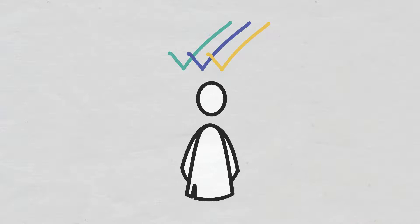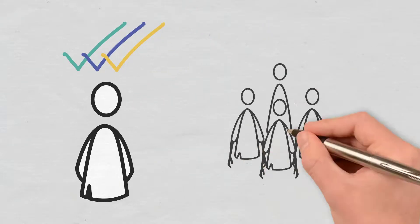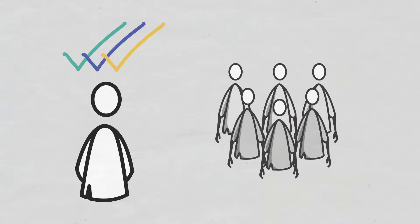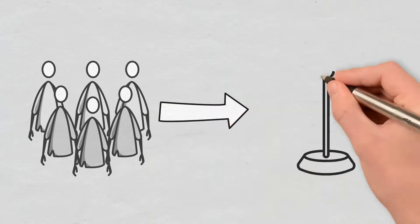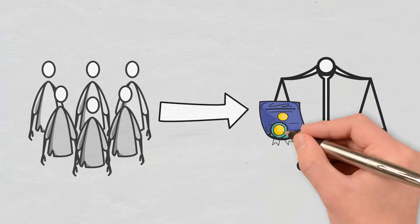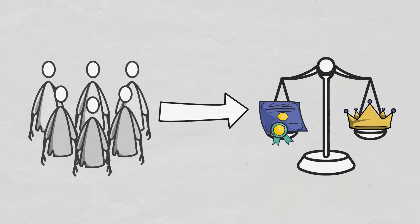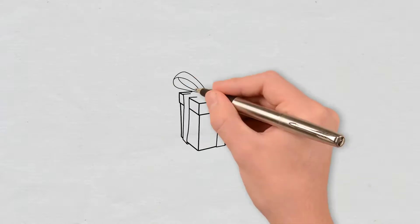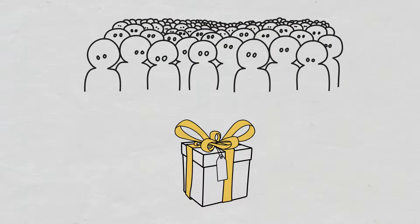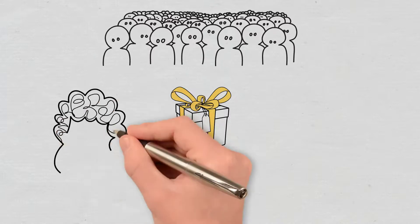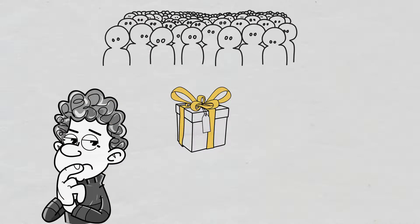Since validators need to be verified, trusted, and picked by the network, this translates into having a rather small validating group. This does offer the benefit of a higher level of throughput, but it also makes a Proof of Authority network more centralized. Because block rewards are visible to everyone in a public blockchain, anyone can see how much a certain Proof of Authority validator has earned, meaning there may be a higher risk of corruption or manipulation.